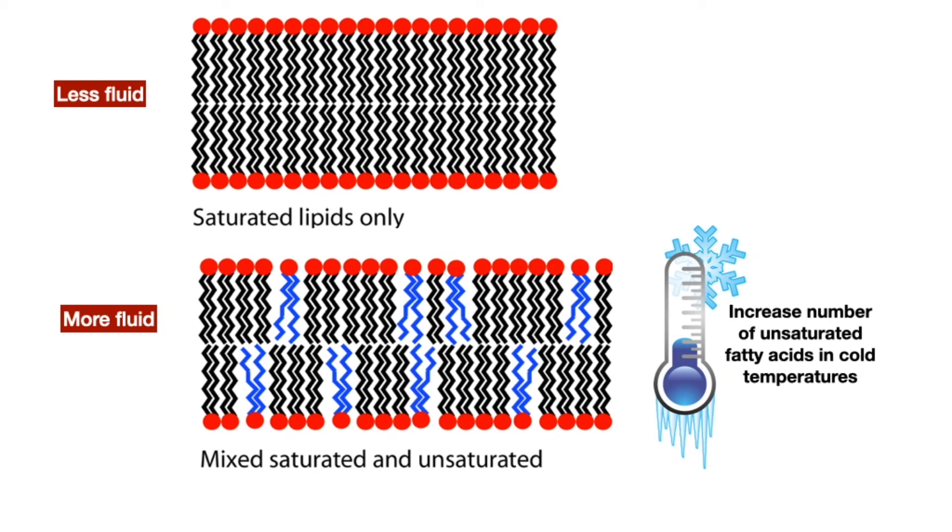The composition of the phospholipid bilayer is particularly important in a cold environment. A cold environment tends to compress membranes composed largely of saturated fatty acids, making them less fluid and more susceptible to rupturing. Many organisms, like fish, can adapt to cold temperatures by changing the proportion of unsaturated fatty acids in their membranes in response to the lowering of temperature. In other words, when it gets cold, some organisms increase the amount of unsaturated fatty acids in their membranes in order to keep their membranes fluid.